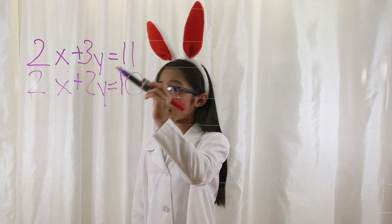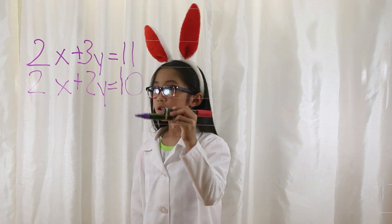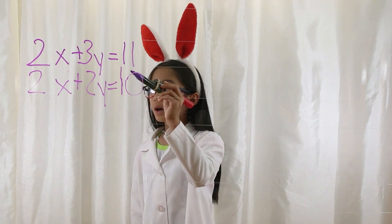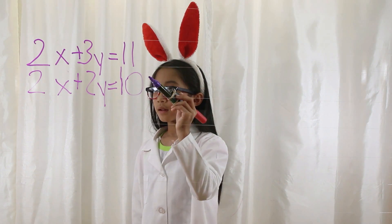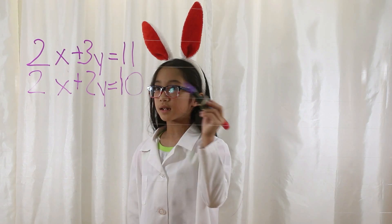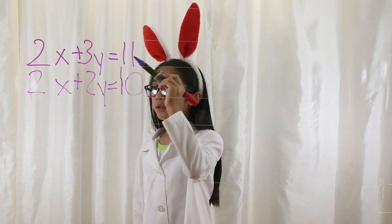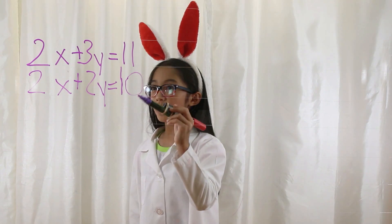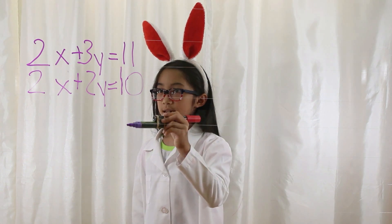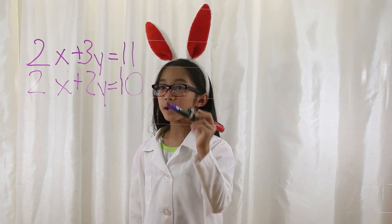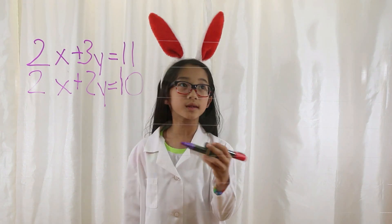So if 3y is bigger than 2y, then you subtract. So 3y equals 11 minus 2y equals 10. Break it down: 3y minus 2y is y. Bring the equal sign down. 11 minus 10 is 1. So y equals 1.